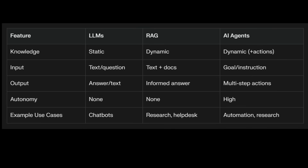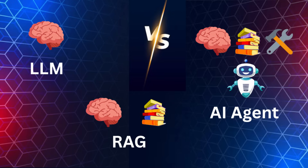Here's the easiest way to remember it. LLM: the smart brain that understands and generates language. RAG: that brain with instant access to a huge library of up-to-date info. AI agent: that same brain and library, but now with arms, legs, and the ability to go get things done in the real world.